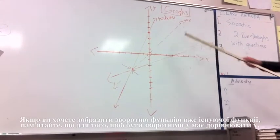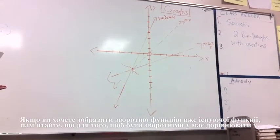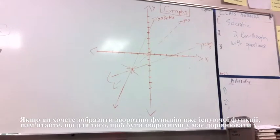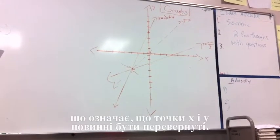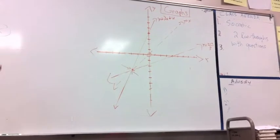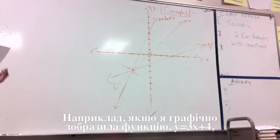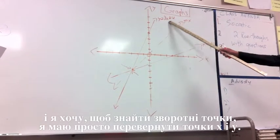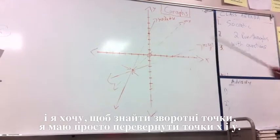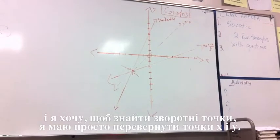When you want to write out an inverse function of a pre-existing function, remember that in order for it to be inverse, y must equal x, meaning that the x and y points must be flipped. For example, if I have graphed y equals 3x plus 4 and I want to find its inverse function, I simply flip the x and y points, and voila, I have my inverse.